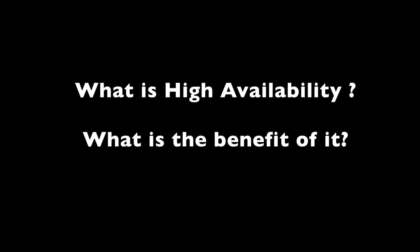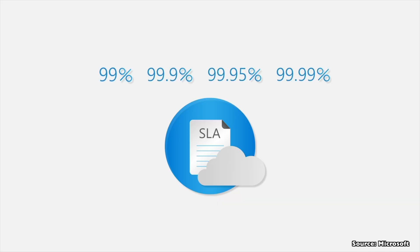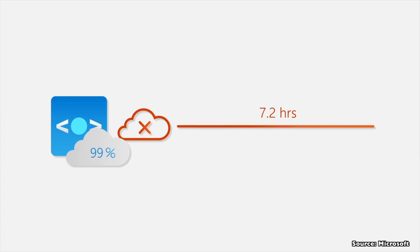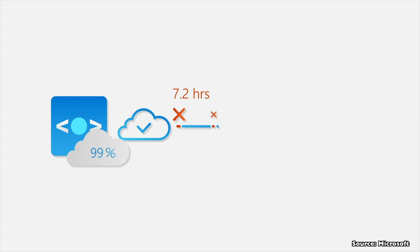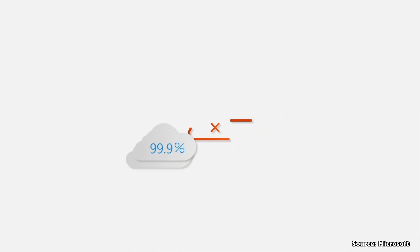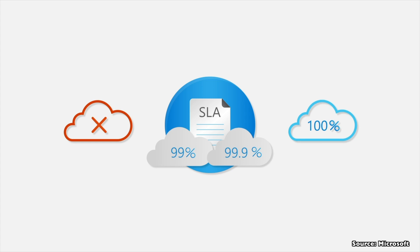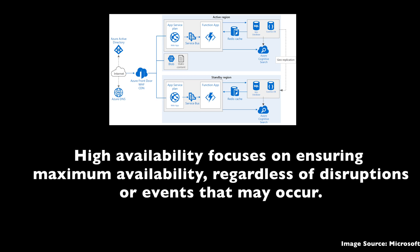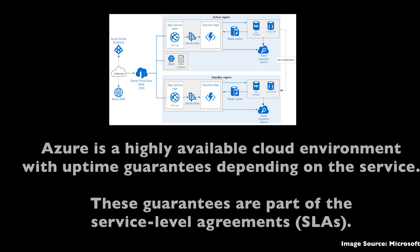Let's delve into the concept of high availability in the cloud — what is it and why do you really need it? Cloud services offer distributed infrastructure and redundant systems which provide unparalleled reliability and resilience. In real-world scenarios, high availability plays a pivotal role in preventing downtime and maintaining business continuity, ensuring systems are always available for customers.